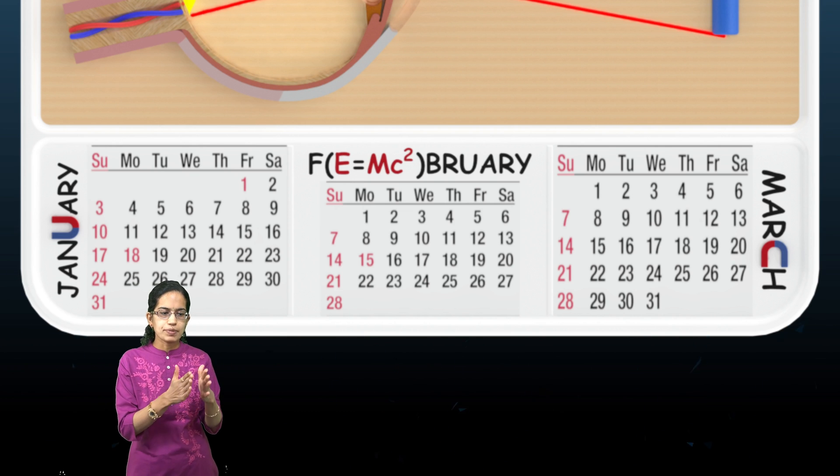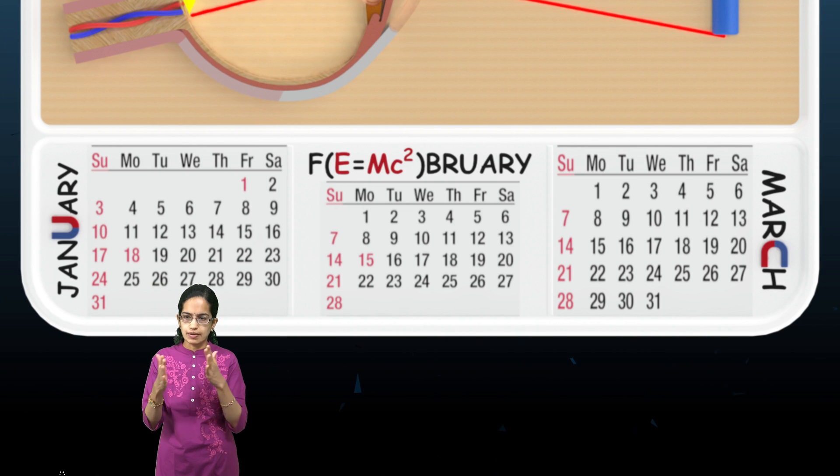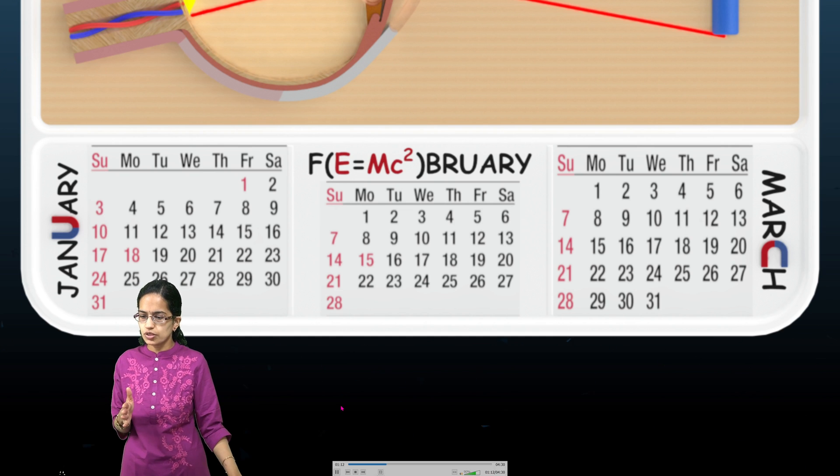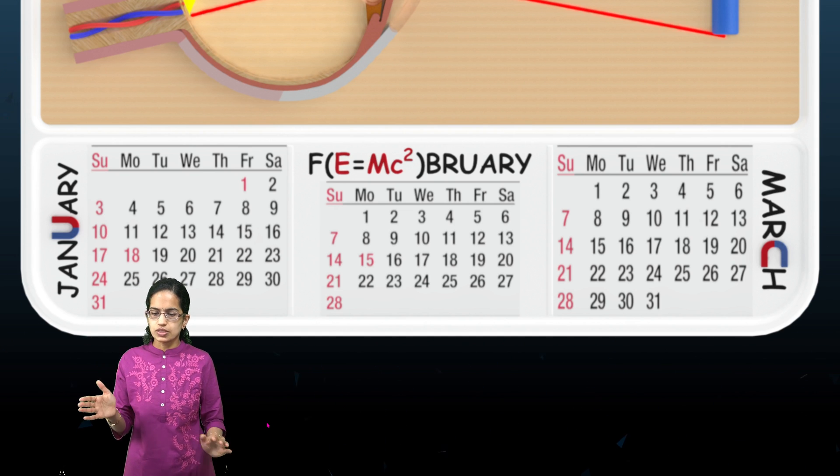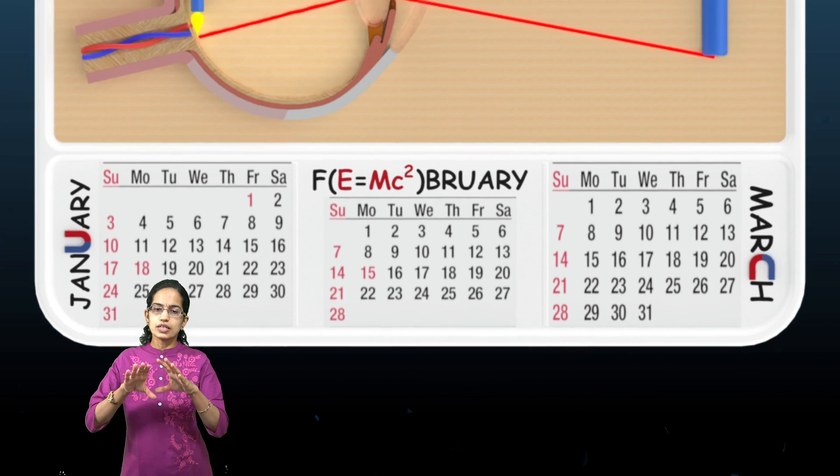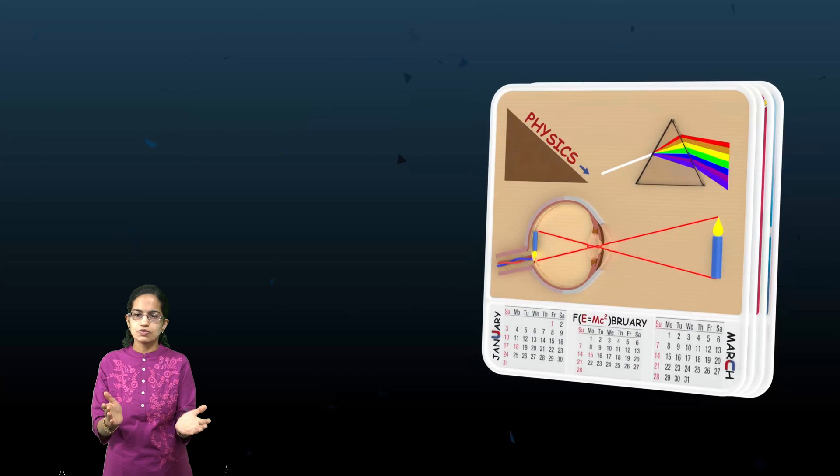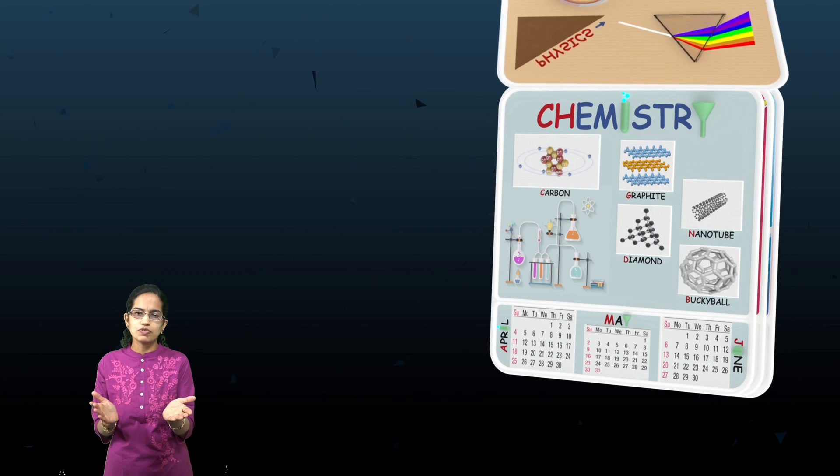For April, May, and June, we have chemistry. In the chemistry section, we would cover various projects related to the developments. Let's flip the calendar for a while. After physics, we would have the next flip, which is chemistry.